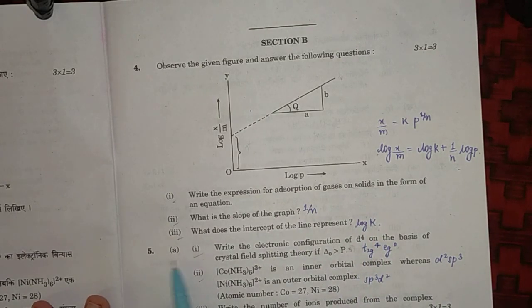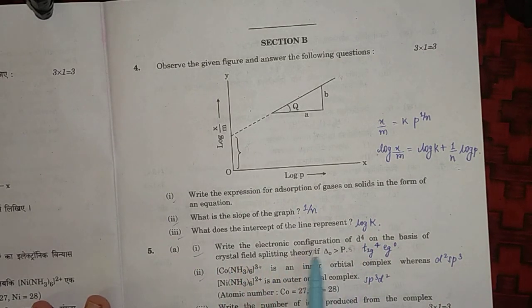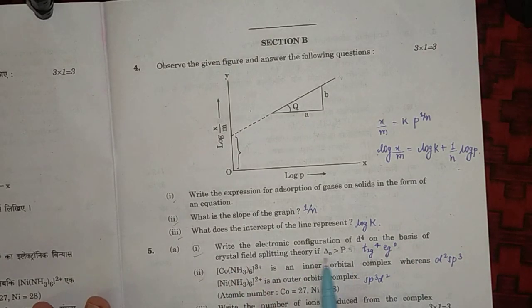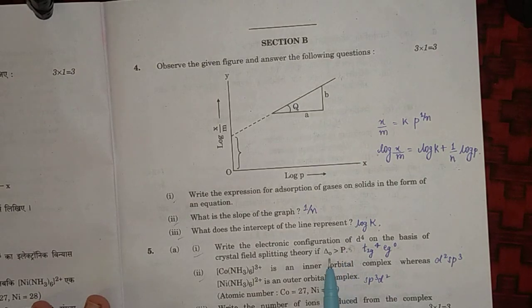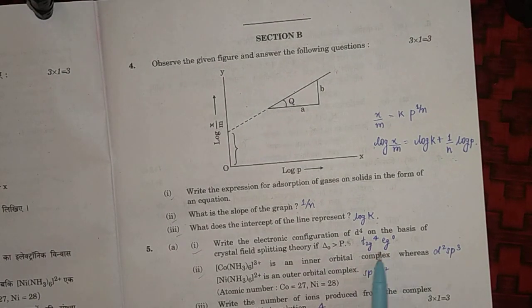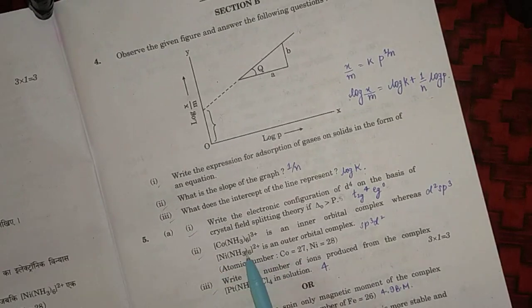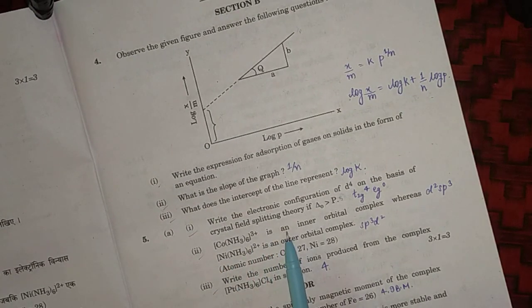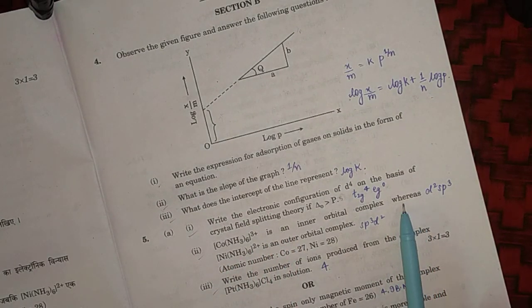Fifth question: write the electronic configuration of d4 on the basis of crystal field splitting theory. If delta naught is greater than pairing energy, it means it is a strong field ligand, so fourth electron will go to t2g level only, so t2g4 eg0. Second question is: Co(NH3)6 3+ is an inner orbital complex.